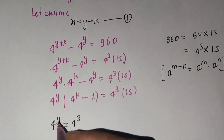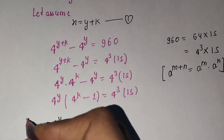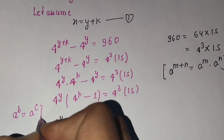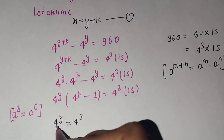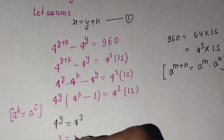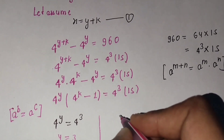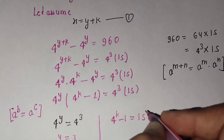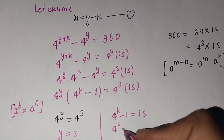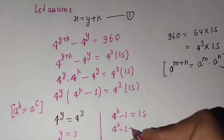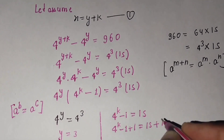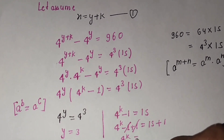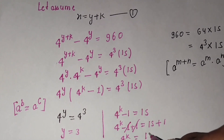Since both sides have the same base, the powers are equal — using the formula: if a^b equals a^c, then b equals c. So y equals 3. And the remaining factor gives: 4^k minus 1 equals 15. Adding 1 to both sides, the minus 1 and plus 1 cancel, giving 4^k equals 15 plus 1 equals 16.